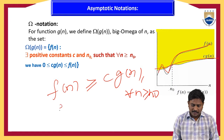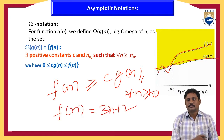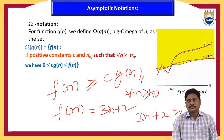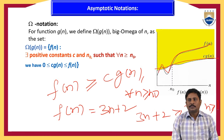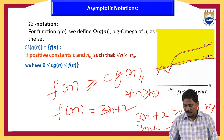For example, take f(n) = 3n + 2. We check: 3n + 2 ≥ 3n. For n = 1: 5 ≥ 3, satisfied. So for any value of n, this condition holds, and we write 3n + 2 as Ω(n).